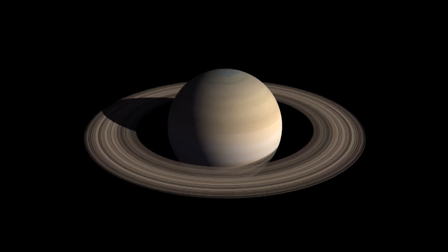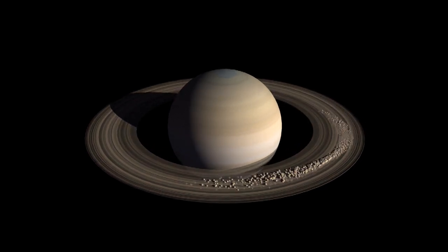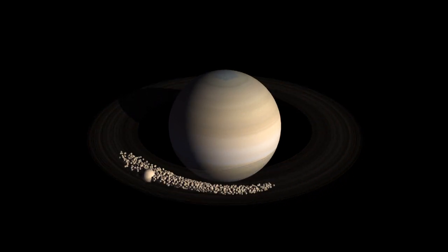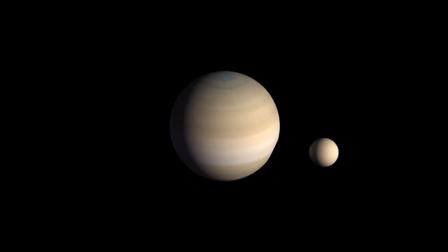Saturn is known for its beautiful set of rings. But why are there rings there? Why don't the rings come together to form a moon?